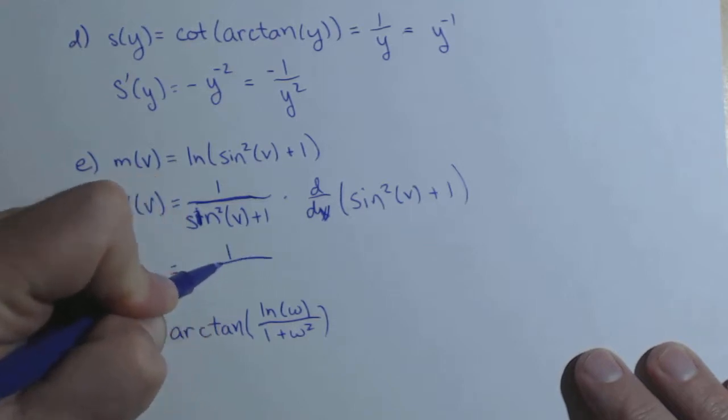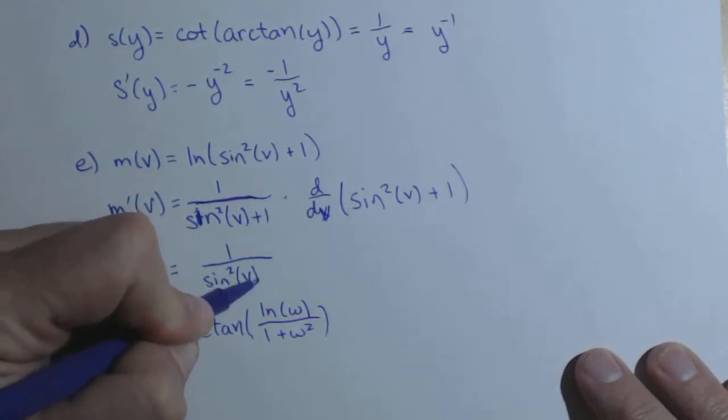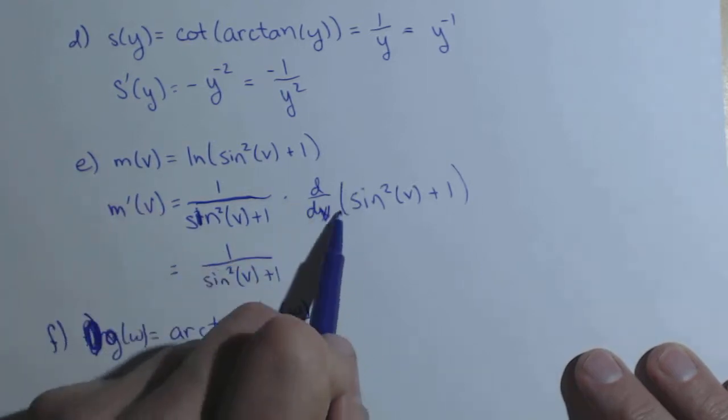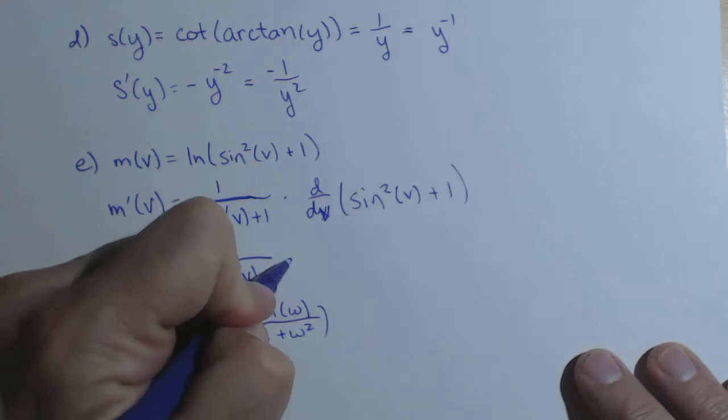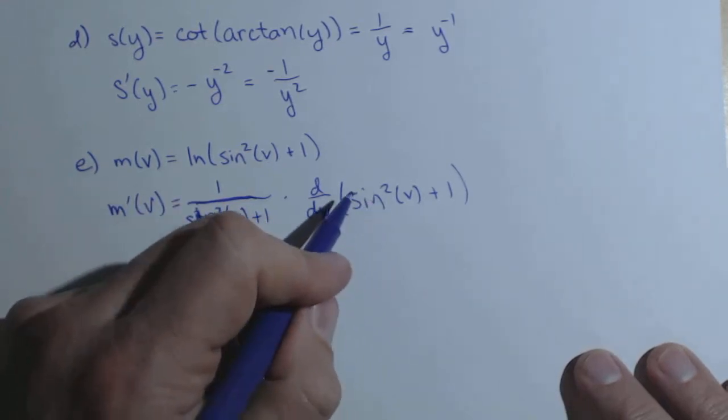So we have one over sine squared of v plus one. Now this derivative we'll do piece by piece, and the derivative of one is zero, so we're not too concerned about that. Always be careful about this one.